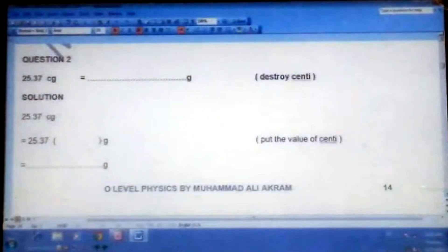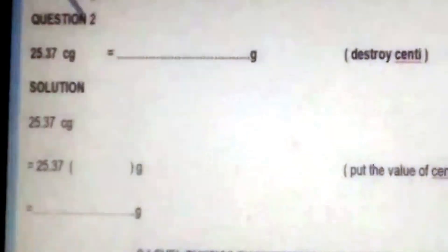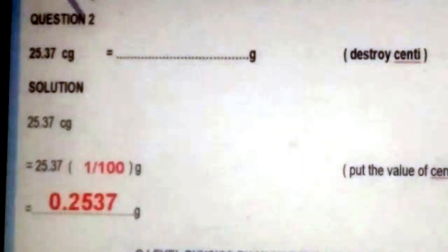Question number 2 says: 25.37 centigrams are equal to how many grams? I can show you the zoom view for this question. 25.37 centigrams are equal to dash grams. How do we deal with centi? Its value is 1 over 100. So 25.37 multiplied by 1 over 100. The decimal will go two steps backwards. The frog will take two jumps backwards or leftwards. So the answer should be 0.2537.